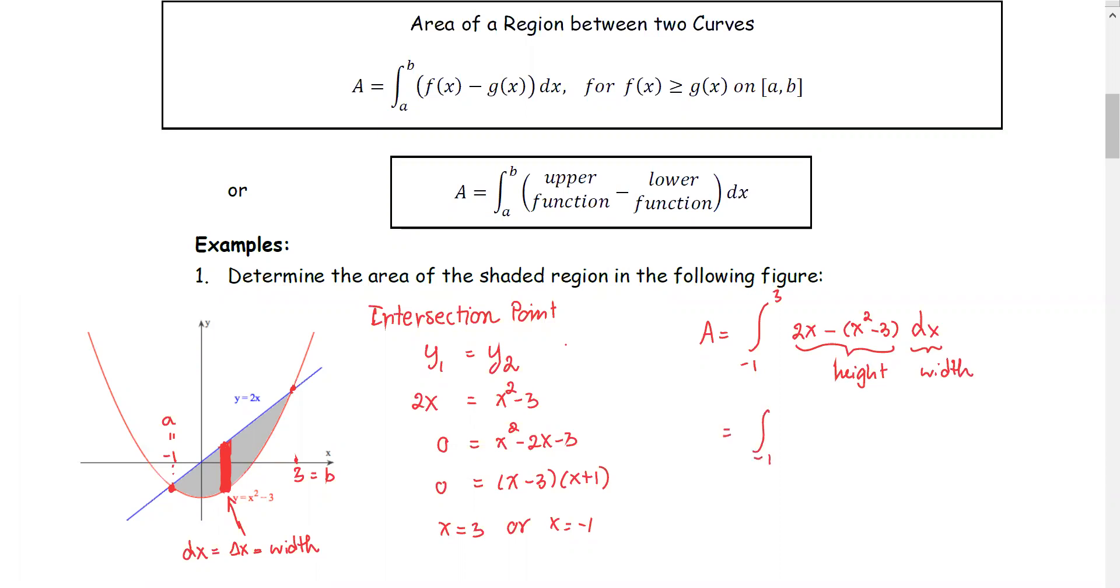Simplify a little bit more for the integrand. We have 2x minus x squared plus 3, with respect to x.